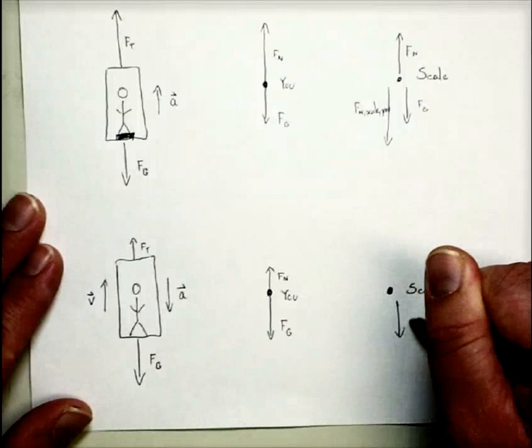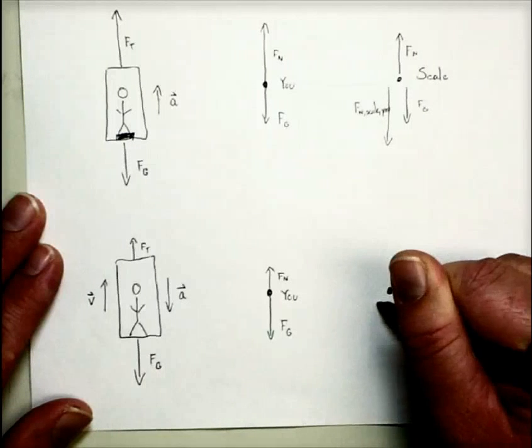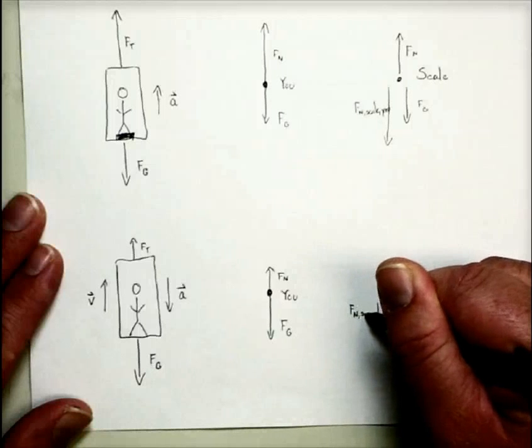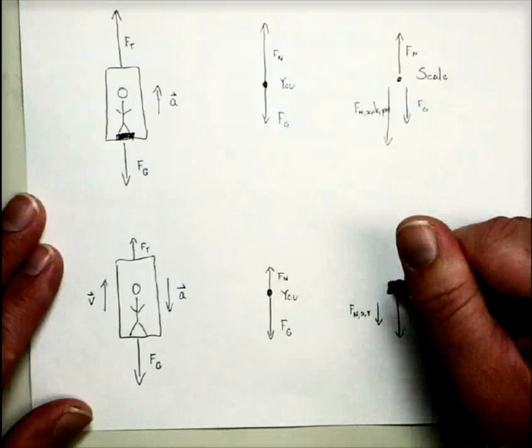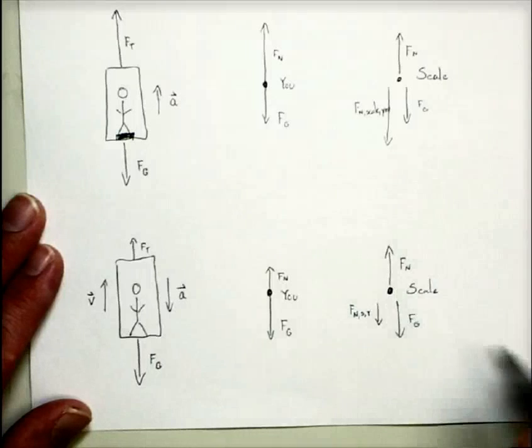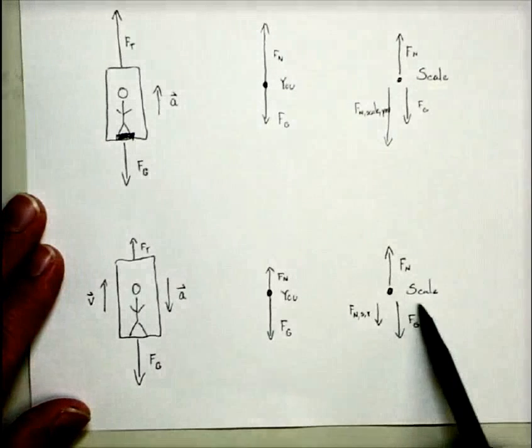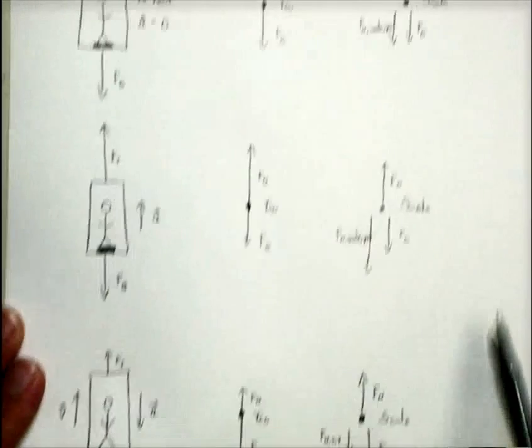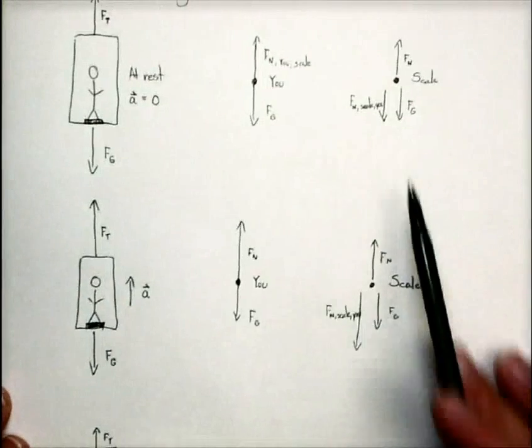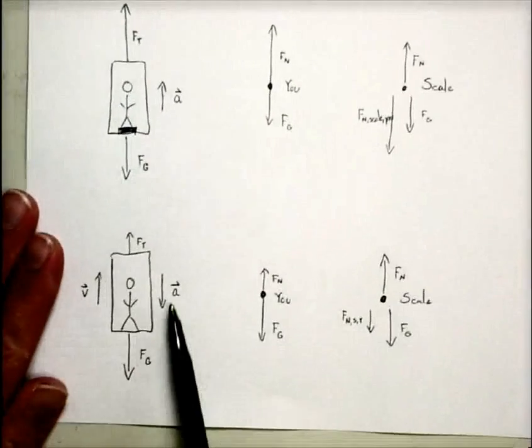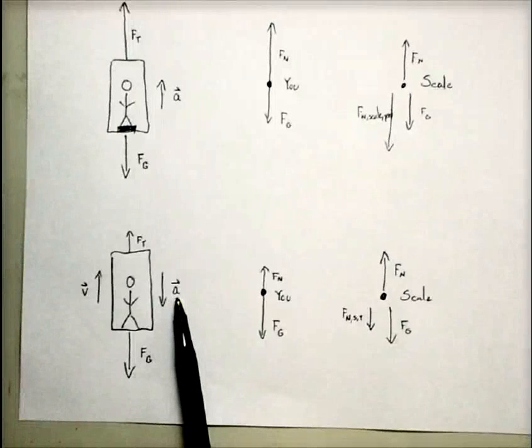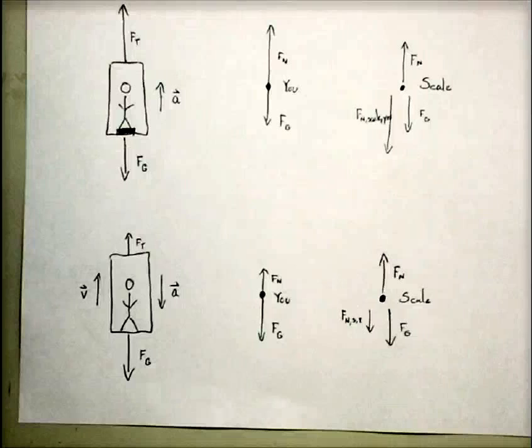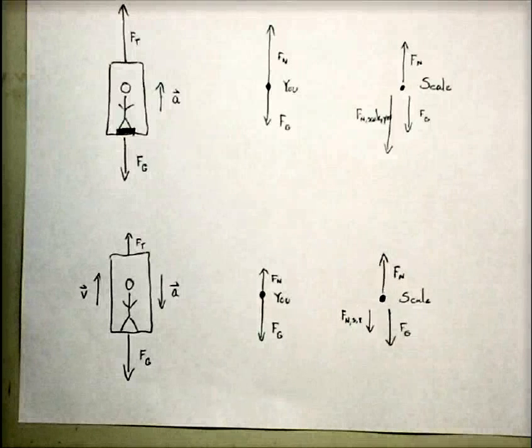Which means on our scale, we have the force of gravity just like always. But now our normal force on the scale from you is smaller. And this is where your weight comes from. So now with the smaller force here, your weight is smaller than it used to be. So as the car is decelerating, your apparent weight gets smaller. You start to feel a little weightless as that happens.